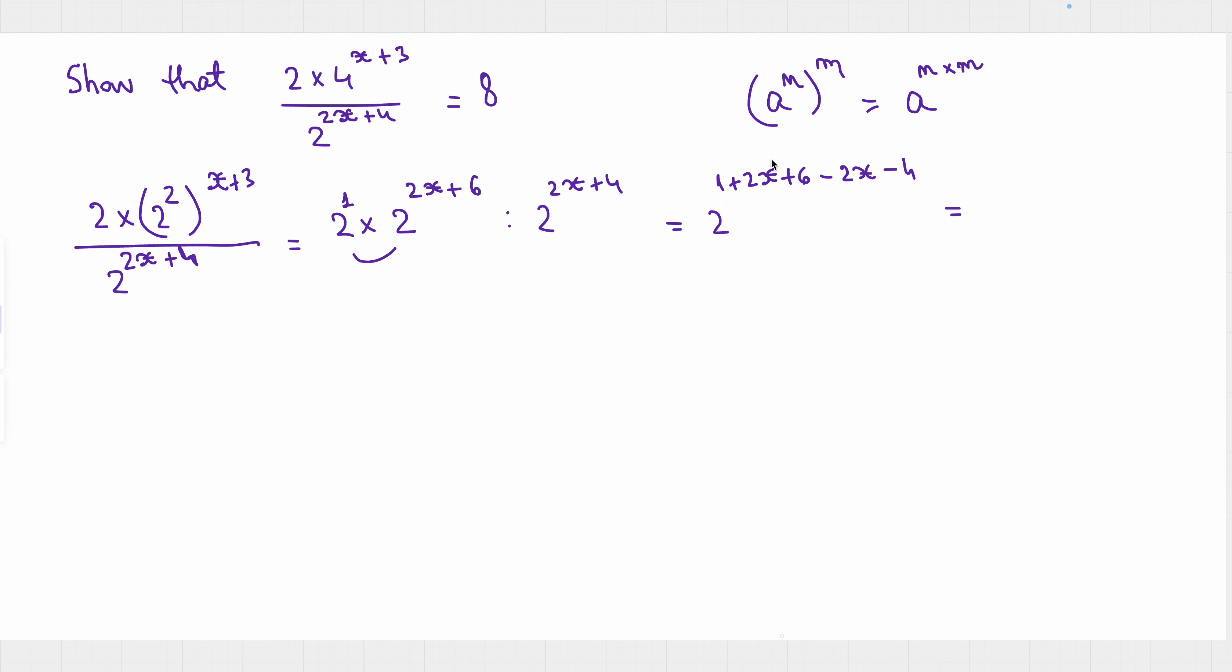So basically, 2x minus 2x, 1 plus 6 is 7 minus 4 is 3. So 2 to the power 3, which is 8. The exact answer we were expecting. Have a lovely day.